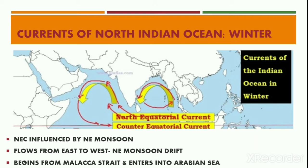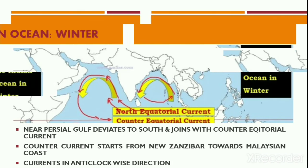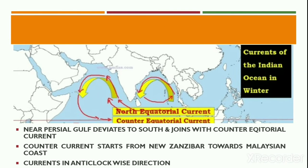This drift starts from the Strait of Malacca and enters the Arabian Sea after flowing along the coast of the Bay of Bengal. Near the Persian Gulf, the currents take a southern course and join with the Counter Equatorial Current.